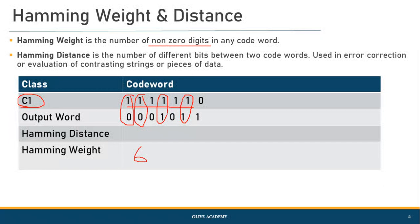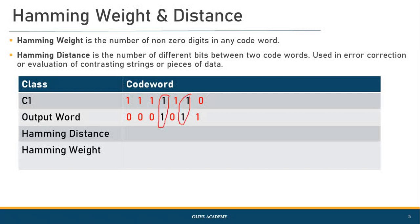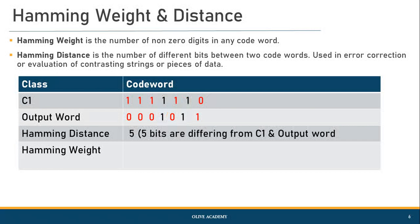In this example we see there are five pairs which are completely different whereas two pairs are identical. So we consider the number of different bits to be the hamming distance. In this example I see five, because five bits are differing between c1 and the output word. Hamming weight is just the number of non-zero values.